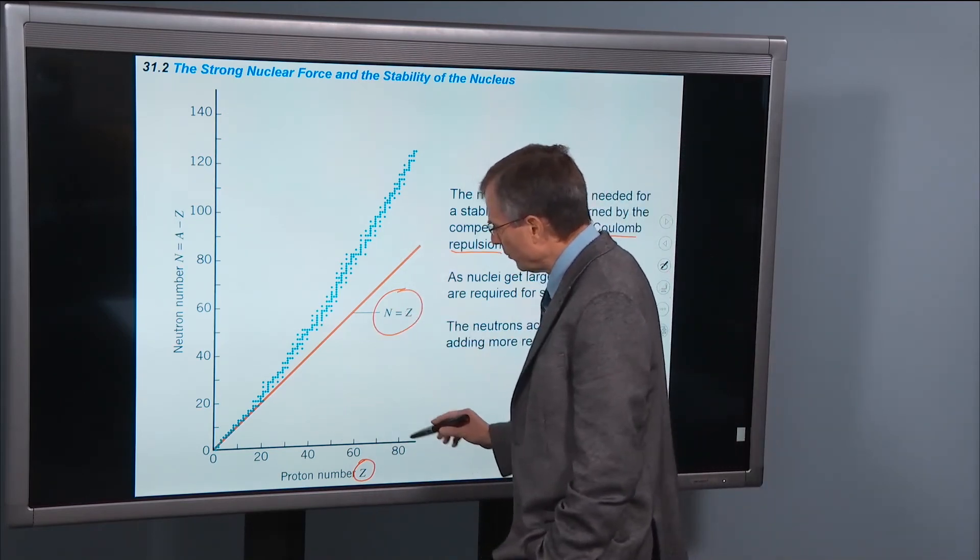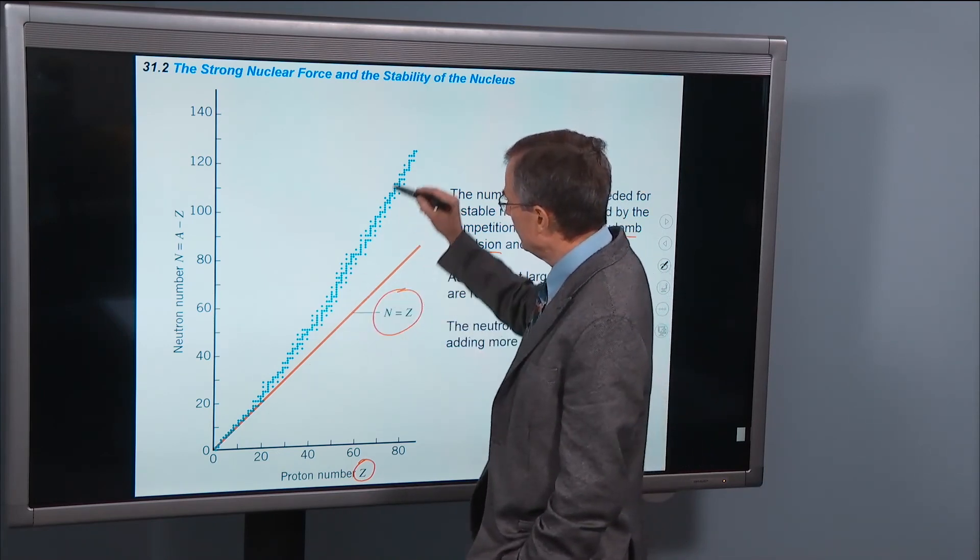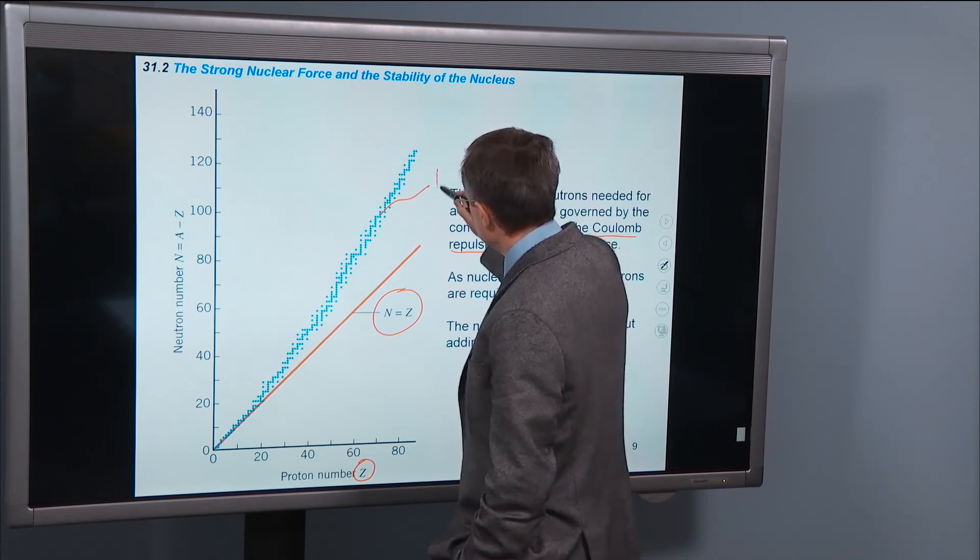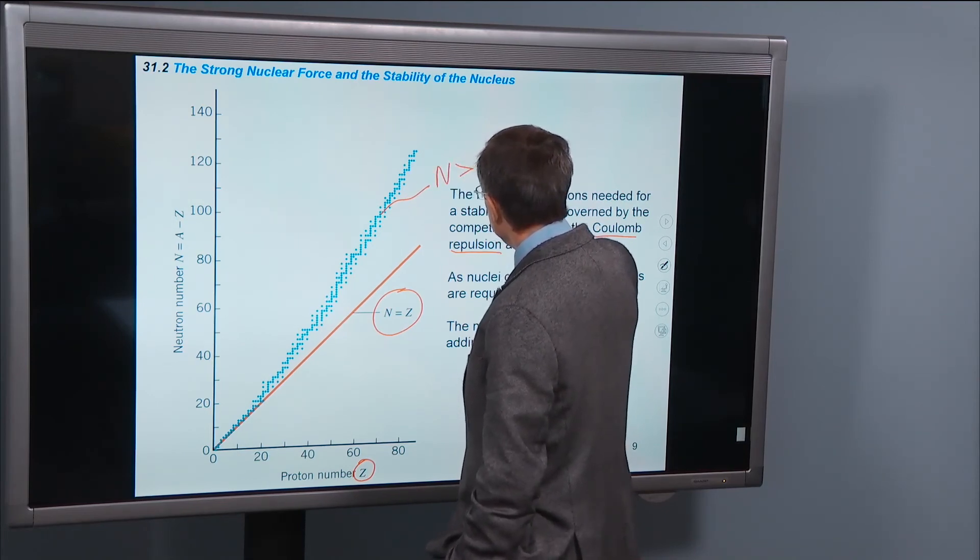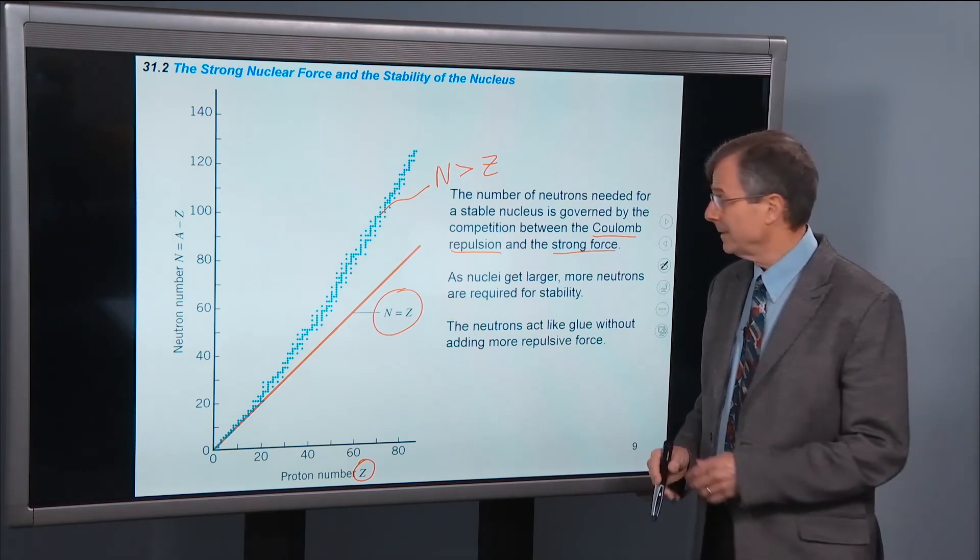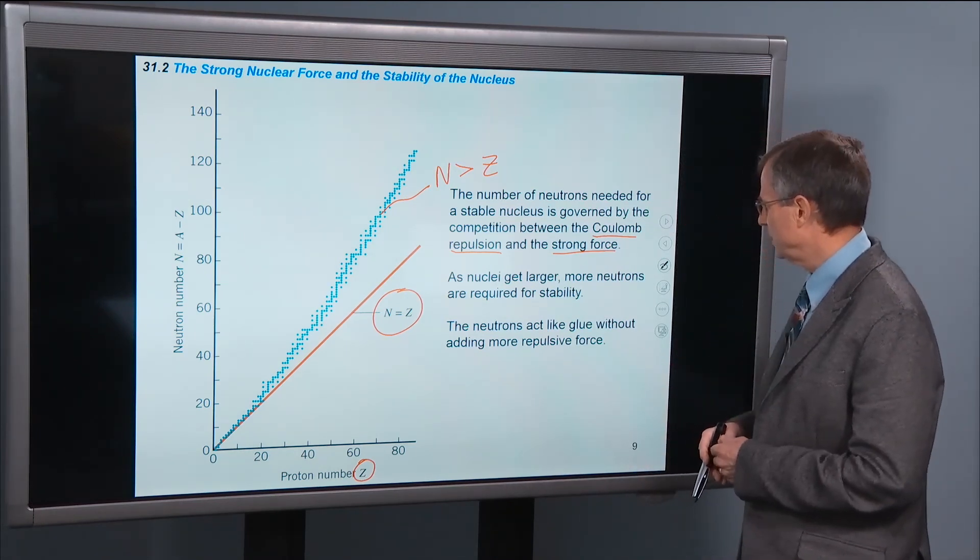As you get more and more protons to overcome that coulombic repulsion, you add more neutrons. So this curve says that the number of neutrons is greater than the number of protons in order to get a stable nucleus.